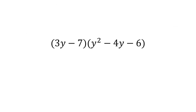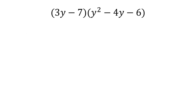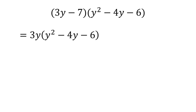Consider something like this: 3y minus 7 times y squared minus 4y minus 6. To simplify this, we have to multiply every possible combination of terms from the first expression and the second expression. The easiest way to think about this is to break it up into two parts: 3y multiplied by the second polynomial and negative 7 multiplied by the second polynomial. If we simplify these two expressions and put them together, we will have our final answer.